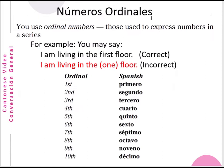Números ordinales — ordinal numbers. You use ordinal numbers to express the number in a series. For example, you may say 'I am living in the first floor.' You may not say 'I am living in the one floor,' because 'one' is the cardinal number. Cardinal numbers are used just to count something, while ordinal numbers tell you which floor it is. In Spanish, there is also a difference between the ordinal number and the cardinal number.